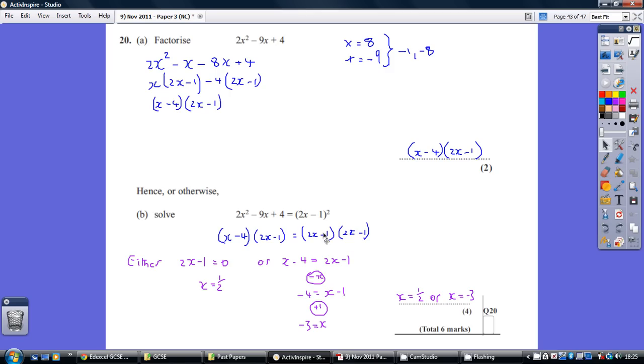we've got a double solution here. One solution is effectively where these two become nought. Okay, we've got a 2x minus 1 and a 2x minus 1. So we basically, whatever makes that nought, nought lots of whatever equals nought lots of whatever. So that's one solution coming from 2x minus 1 being nought.